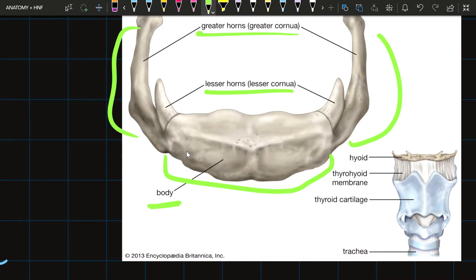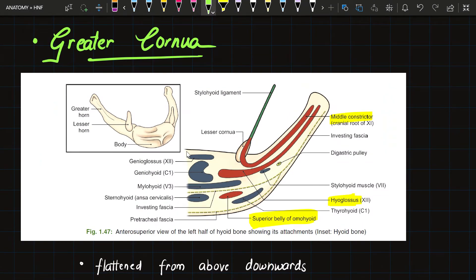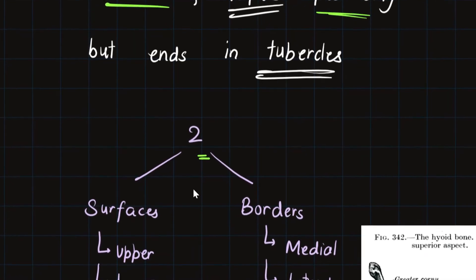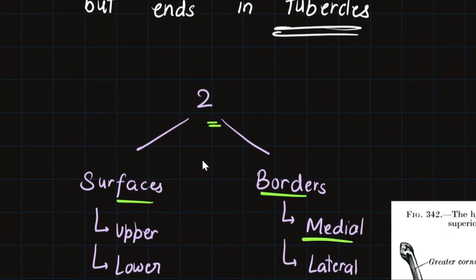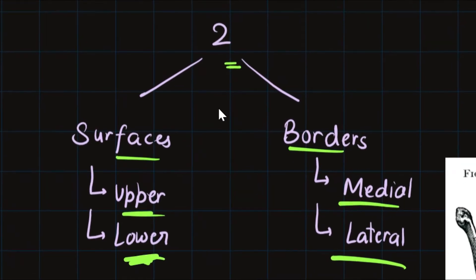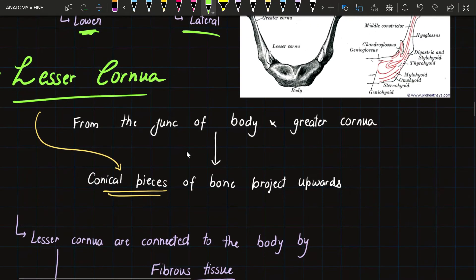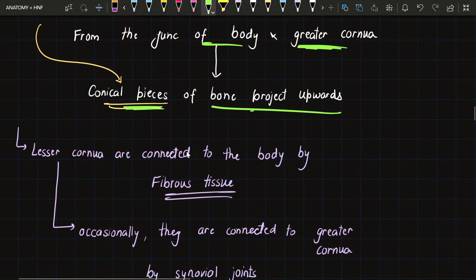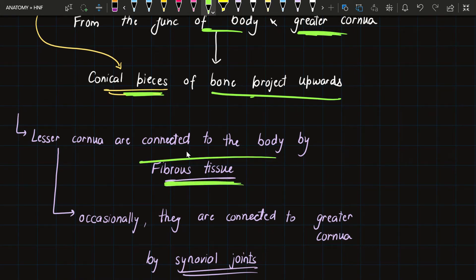The lesser cornua project as conical projections from the body. Regarding the greater cornua: each is flattened from above downwards, tapers posteriorly but ends in a tubercle, and has two surfaces (upper and lower) and two borders (medial and lateral). The lesser cornua arise from the junction of the body and greater cornua as conical pieces projecting upwards. They are connected to the body by fibrous tissue and occasionally to the greater cornua by synovial joints.